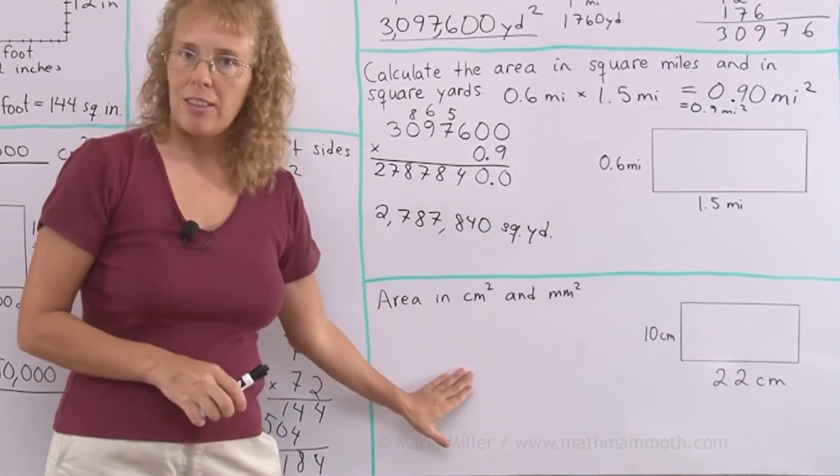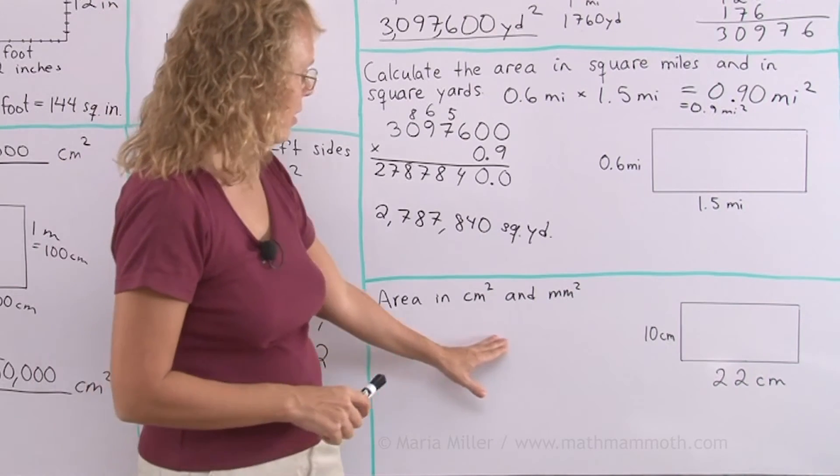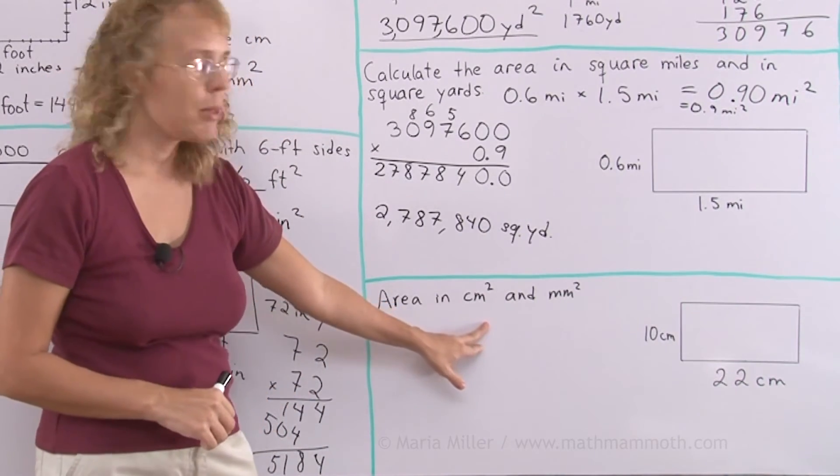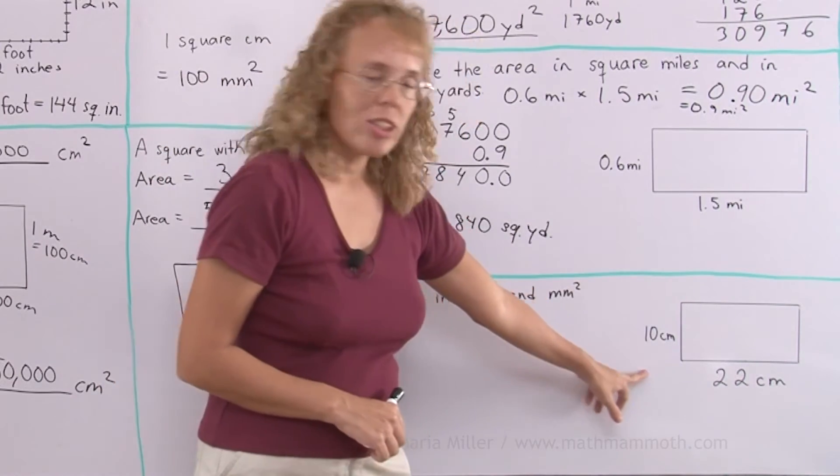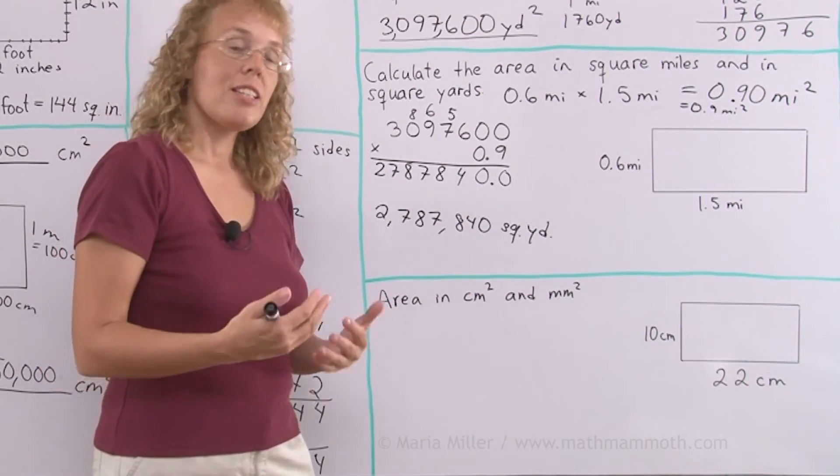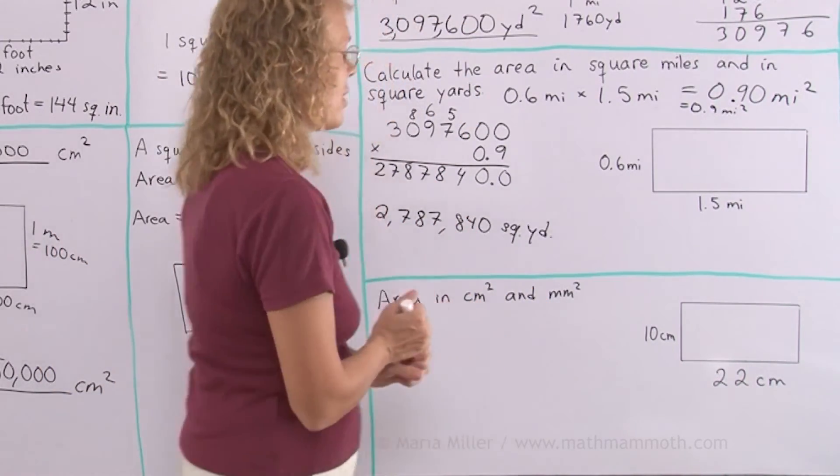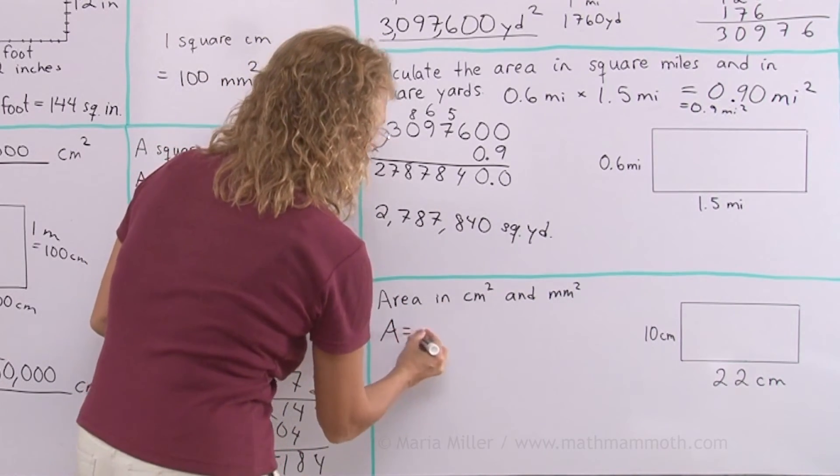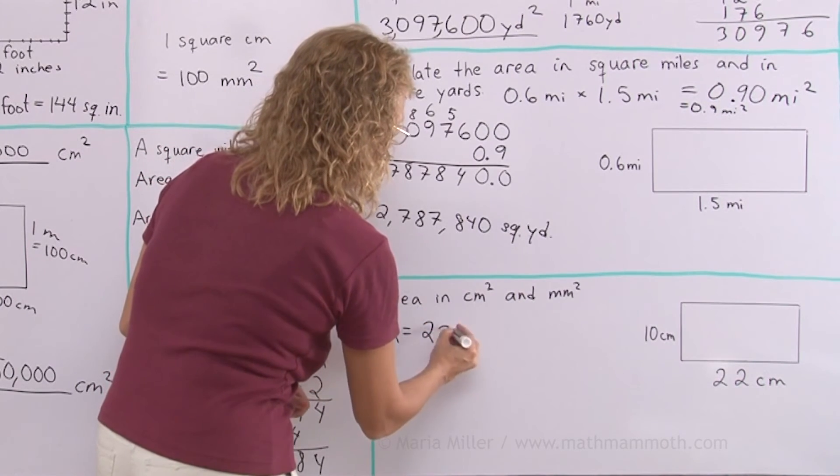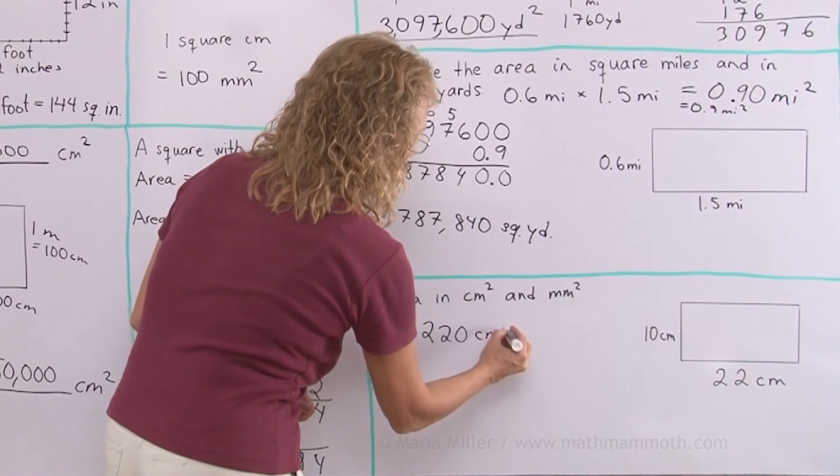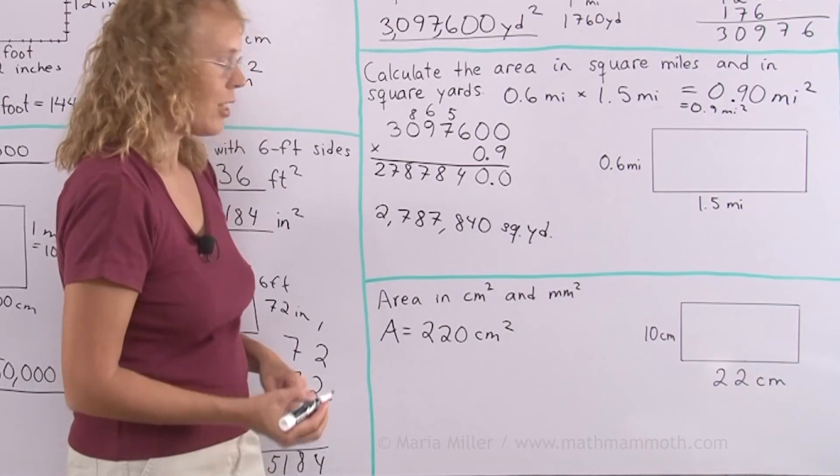Lastly, we have another rectangle here. Calculate the area in square centimeters and in square millimeters. Our dimensions are given in centimeters, so it's very easy to calculate it in square centimeters. The area is, of course, multiply those numbers: 10 times 22. It's 220 square centimeters.